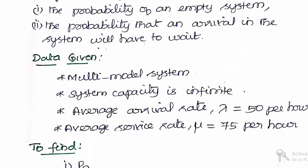The average arrival rate lambda has been mentioned in the problem as 50 per hour and average service rate mu is given as 75 per hour.